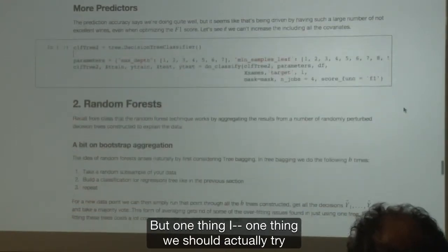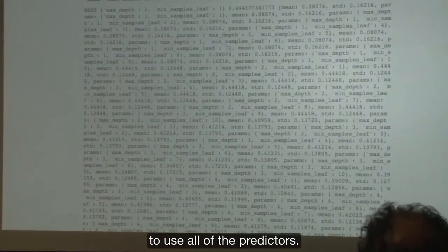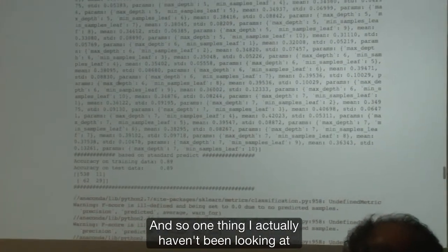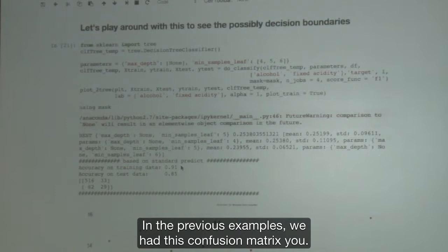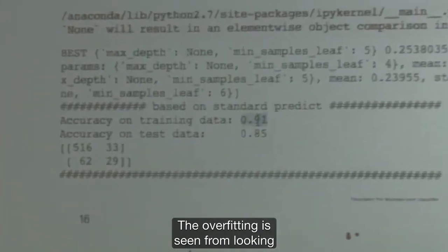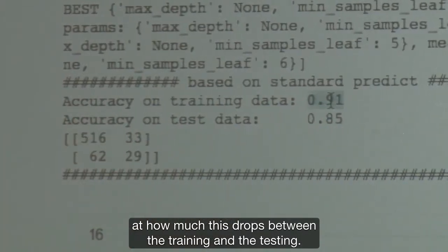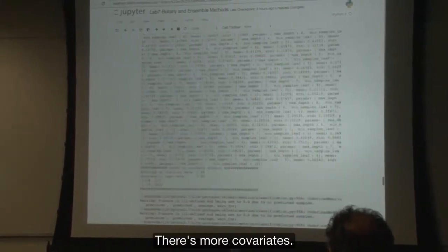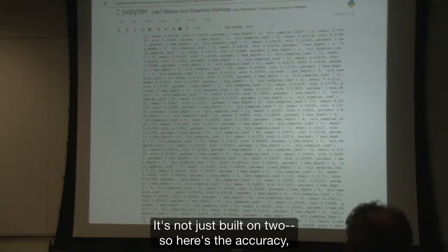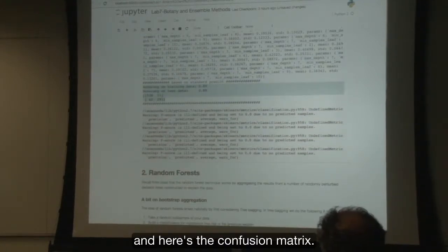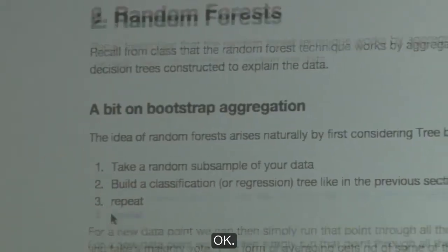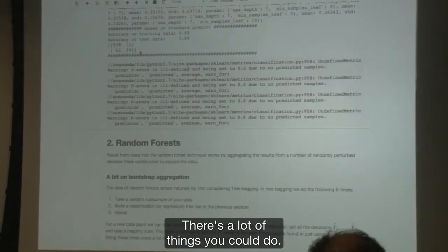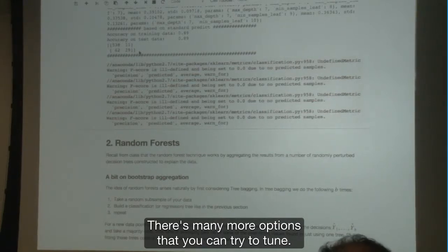But one thing we should actually try is, instead of just using two predictors, to use all of the predictors. In the previous examples, we had this confusion matrix. You see this overfitting issue. The overfitting is seen from looking at how much this drops between the training and the testing. And in this example, it's a little bit better. There's more covariates. There's more ways for the tree to be built. So the problem before was that it was just being built with two covariates, but now we have 11 covariates.